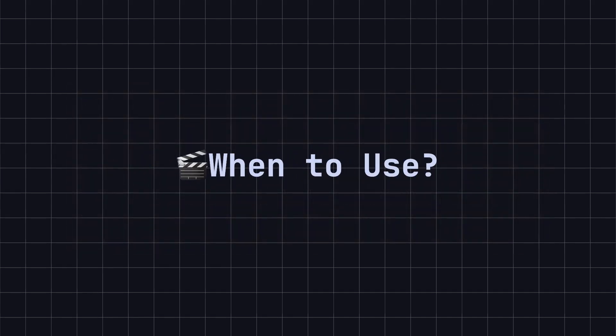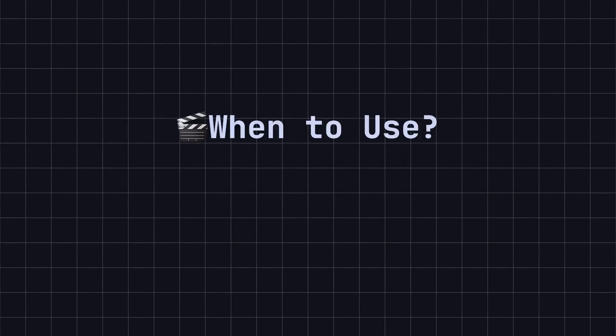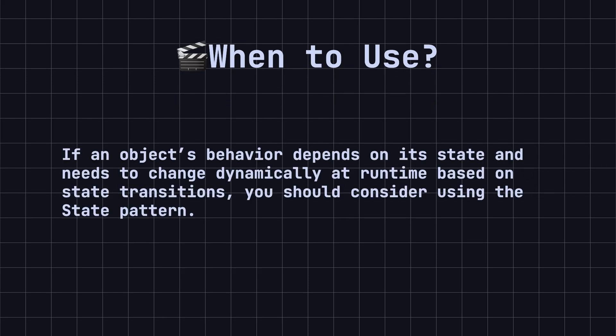So, when should you consider using the state design pattern? If an object's behavior depends on its state and needs to change dynamically at runtime based on state transitions, you should consider using the state pattern. This pattern is particularly useful in systems with complex state transition logic, such as automatic coffee machines, vending machines, or order status management.